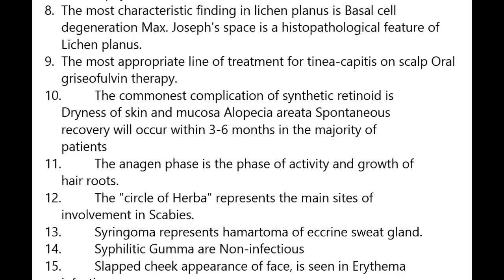Alopecia areata: spontaneous recovery will occur within three to six months in the majority of patients. The anagen phase is the phase of activity and growth of roots. The circle of Hebra represents the main sites of involvement in scabies. Syringoma represents a hamartoma of eccrine sweat glands.